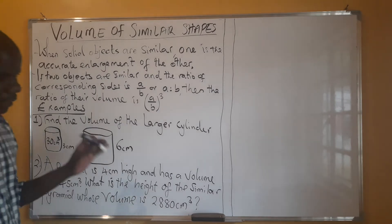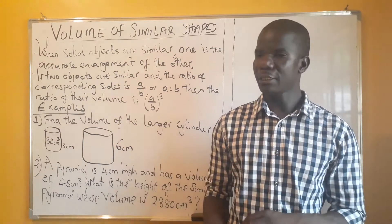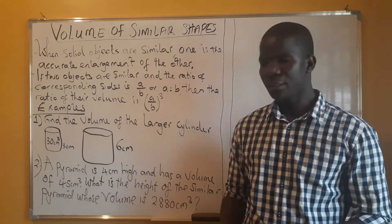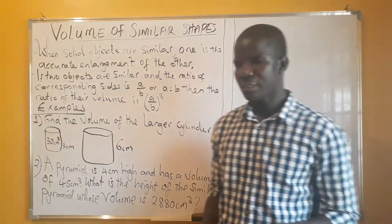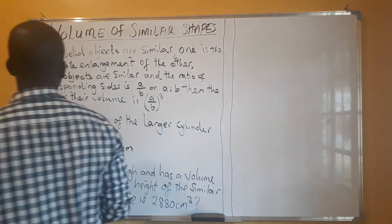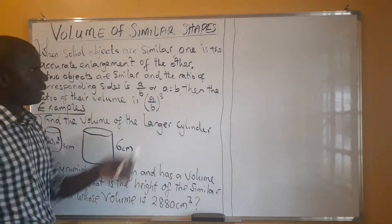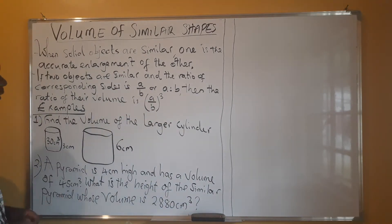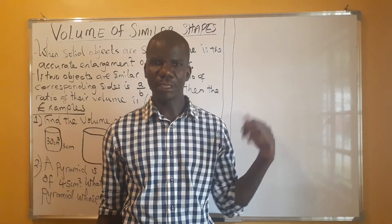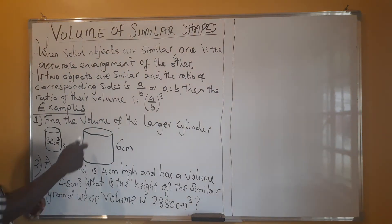This is the third lesson I'm covering on this topic, so I always insist and advise that you should start with the previous lessons — lesson one, lesson two — and this is the third lesson. Building up is very important. When two solid objects are similar, one is an accurate enlargement of the other, which brings out the aspect of ratio.